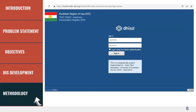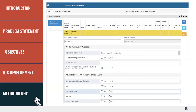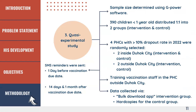My methodology had three steps. The first was a quantitative survey targeting all health vaccination units in the governorate to identify challenges, precisely the time staff spent registering, tracking, and identifying dropout children. From those results I designed a DHIS2 EIR using the Tracker module combining official records with health staff needs. The third step was a quasi-experimental study with an intervention group and a control group. The intervention group targeted children under one year old eligible for the Penta-1 to Penta-3 vaccines, with parents sent three SMS reminders: one day before the due date, and at 14 days and one month after.